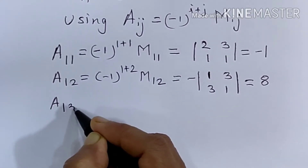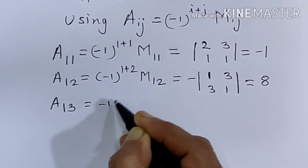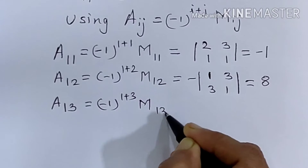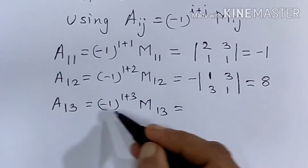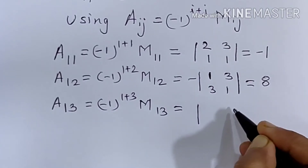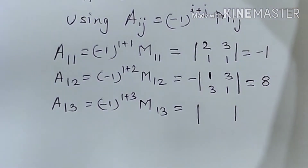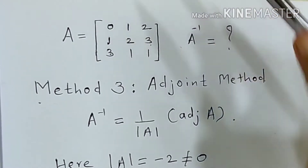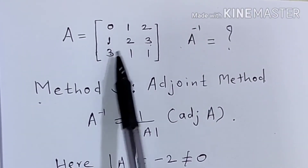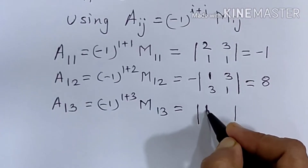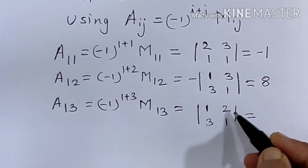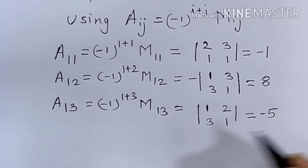Next, A13 is equal to minus 1 raised to 1 plus 3, into M13. The power is even so this will be positive. Deleting the first row and third column gives the determinant with elements 1, 2, 3, 1. That equals 1 minus 6, equal to minus 5.